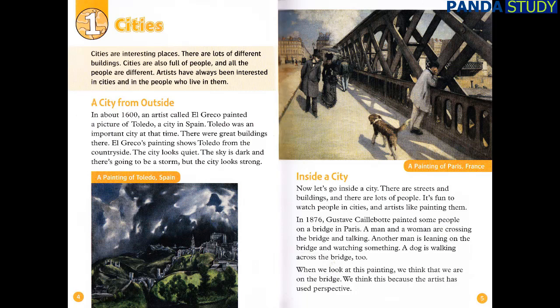Artists have always been interested in cities and in the people who live in them. In about 1600, an artist called El Greco painted a picture of Toledo, a city in Spain. Toledo was an important city at that time — there were great buildings there. El Greco's painting shows Toledo from the countryside. The city looks quiet. The sky is dark and there's going to be a storm, but the city looks strong.